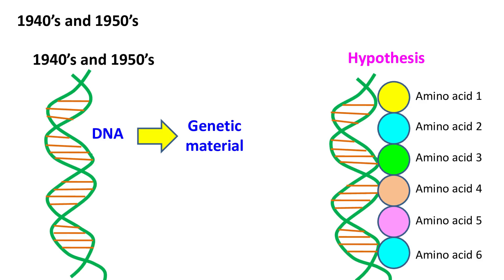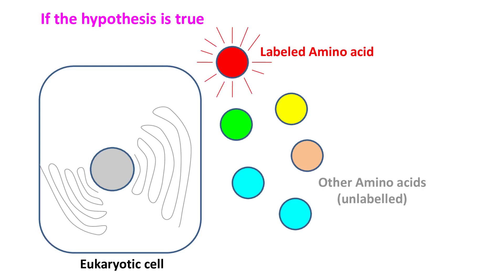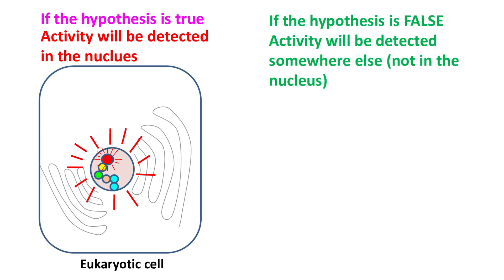To test this hypothesis, they had a wonderful idea. If the hypothesis is true, then cells treated with labeled amino acids must demonstrate activity in the nucleus. If the hypothesis is false, then the activity of labeled amino acids must be detected somewhere else and not in the nucleus.